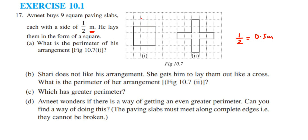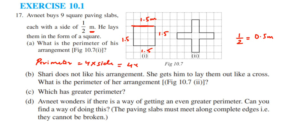I'm talking about one side of the square — after putting three slabs it becomes 1.5 meter. And we know that all the other sides will also be 1.5. So perimeter equals 4 into side, which is 4 into 1.5, which is nothing but 6 meter. So we got 6 meter for the first question.